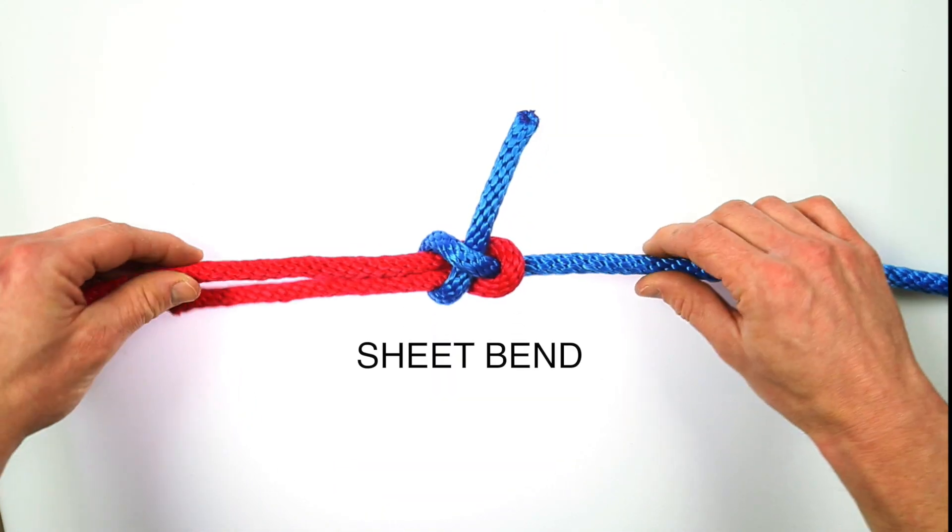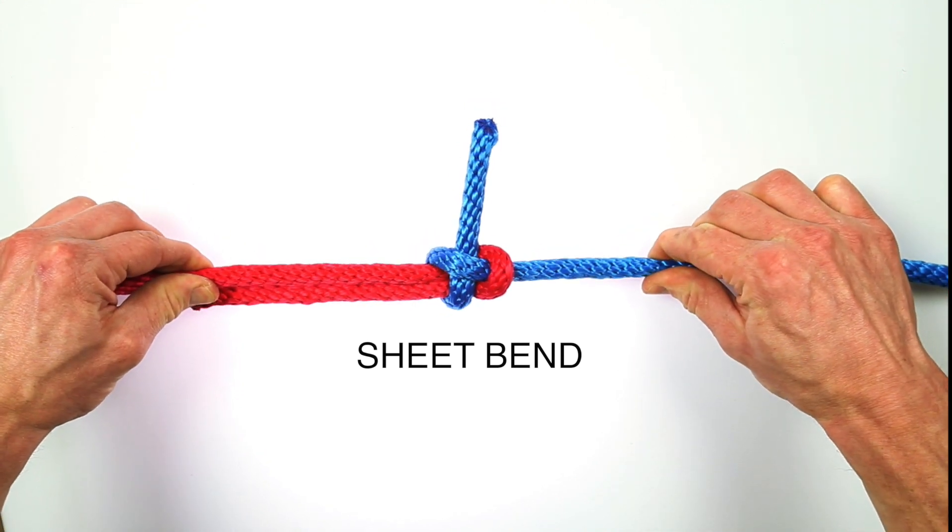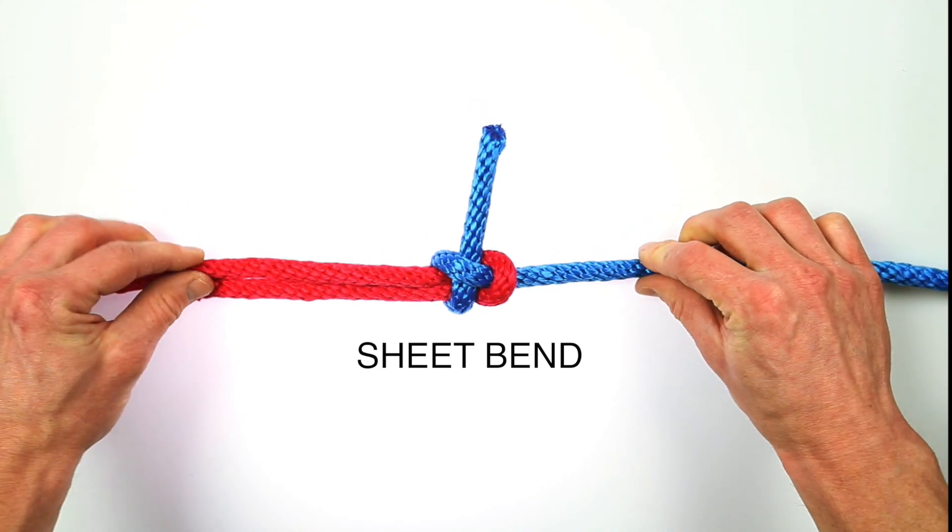Now the sheet bend. This knot is great to know when tying two ropes together and it's also really good for tying two ropes of different sizes, and that's when most people use it. So we'll show it with these two equal size ropes just for the demonstration.